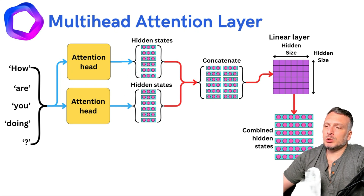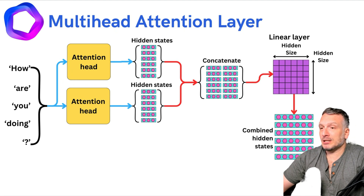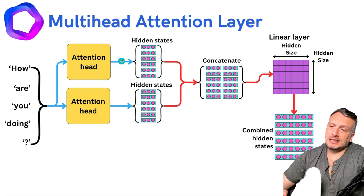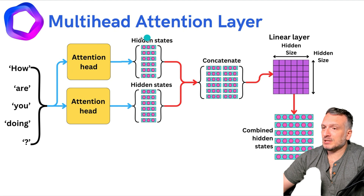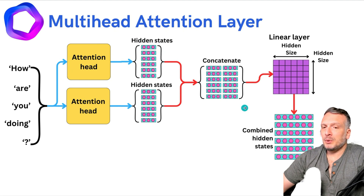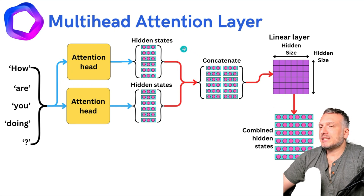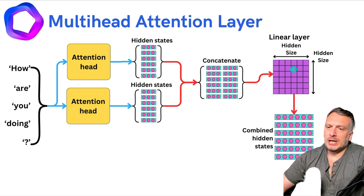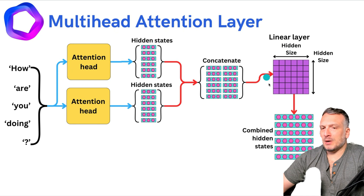Typically, what we do is divide the size of the resulting hidden states by the number of heads. Here we have two heads, so the resulting hidden states have a size divided by two compared to the original. We have two sets of hidden states, we concatenate them, and the output linear layer combines them further.